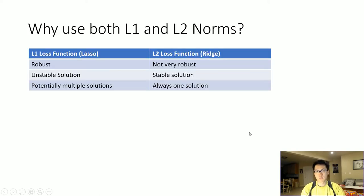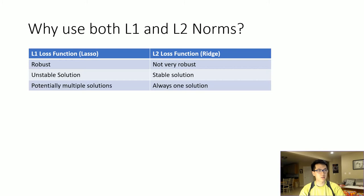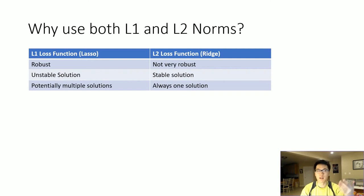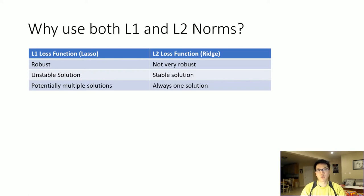So why do we use both L1 and L2 norms? Previously, I've mentioned the differences between the L1 and L2 loss functions. The primary differences are: L1 is robust while L2 is not very robust; L1 has an unstable solution while L2 has a stable solution; and L1 potentially has multiple solutions for loss, while ridge always has one solution.